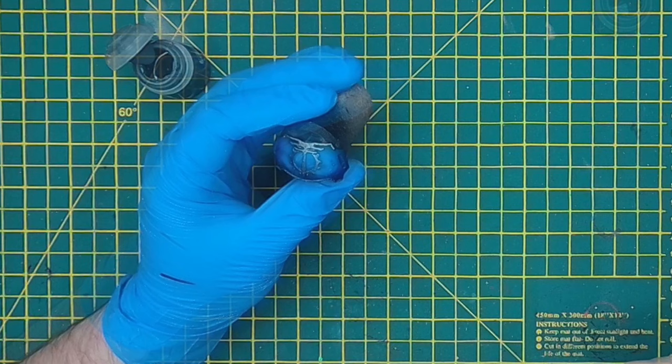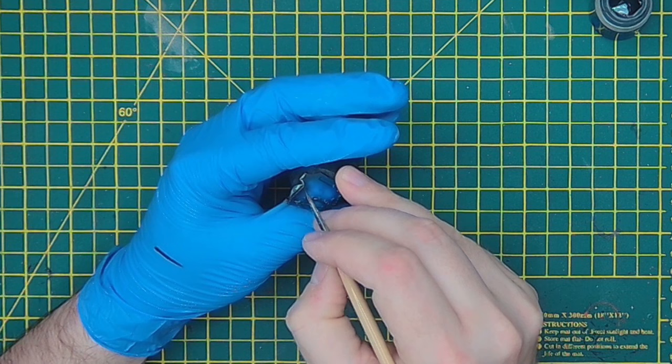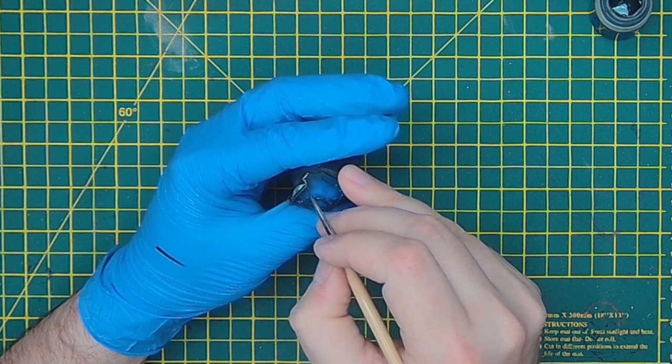Once I'm happy with my chips then I'm going to be going in and doing some line chipping. This is to kind of look like it's been hit by a bullet or something and for this I'm using the same Eschen Grey just applying it with a brush instead.